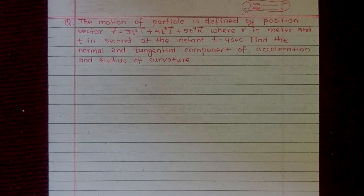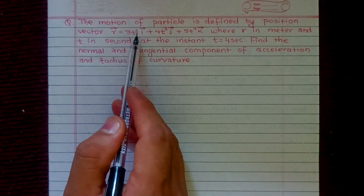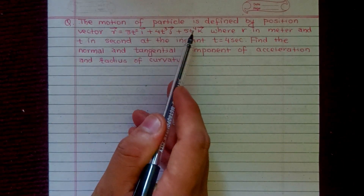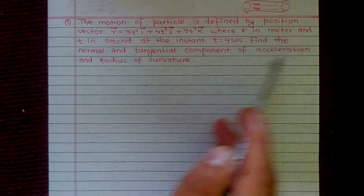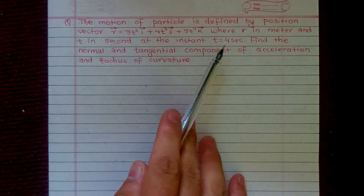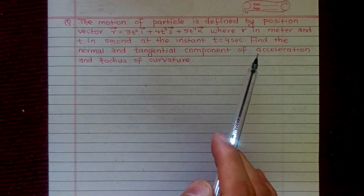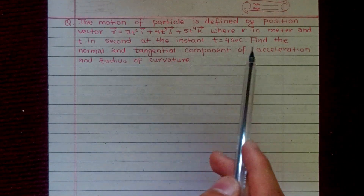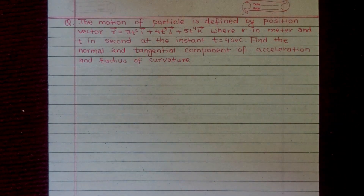The motion of a particle is defined by the position vector r = 3t² i-vector plus 4t³ j-vector plus 5t⁴ k-vector, where r is in meters and t is in seconds. At the instant t equals 4 seconds, we need to find the normal and tangential components of acceleration and the radius of curvature.